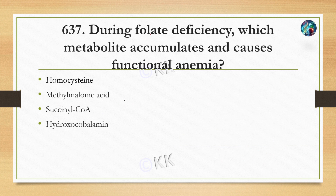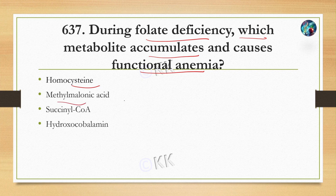During folate deficiency, which metabolite accumulates and causes functional anemia? Option A: homocysteine. Option B: methylmalonic acid. Option C: succinyl coenzyme A. Option D: hydroxocobalamin. The correct answer is homocysteine.